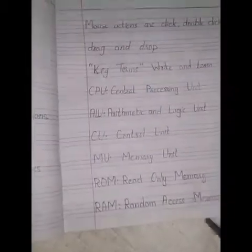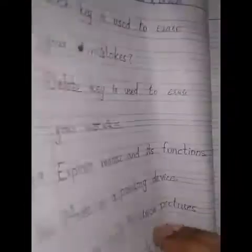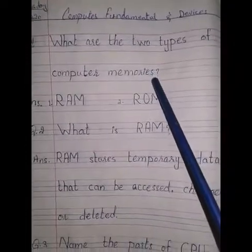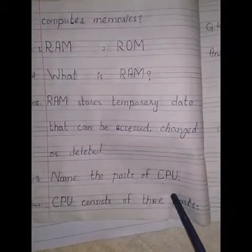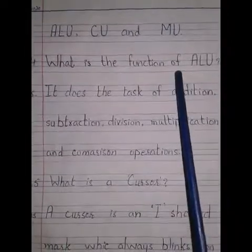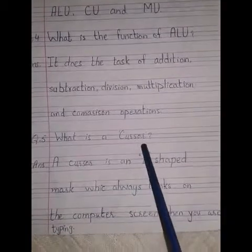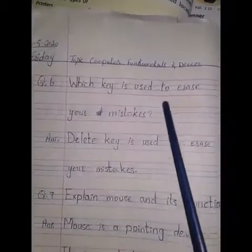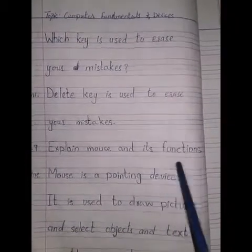Dear students, please complete your homework. We have completed 7 questions from chapter 1: What are the two types of computer memories? What is RAM? Name the parts of CPU. What is the function of ALU? What is a cursor? Which key is used to erase your mistakes? Explain mouse and its functions.